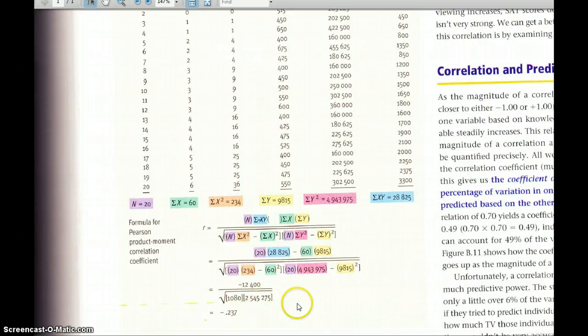Now you simply have to multiply this by this and take the square root of that number. And then you can do the rest of your calculation which is divide the top number by the bottom number.